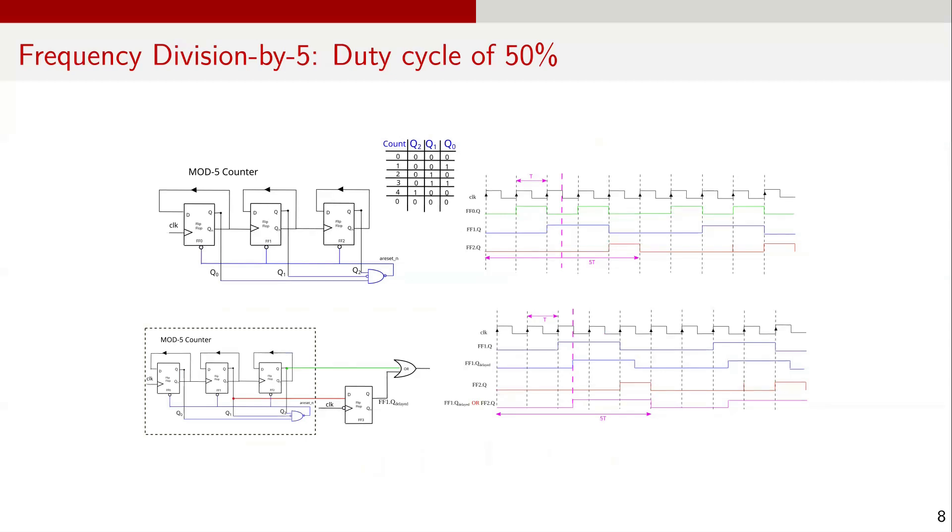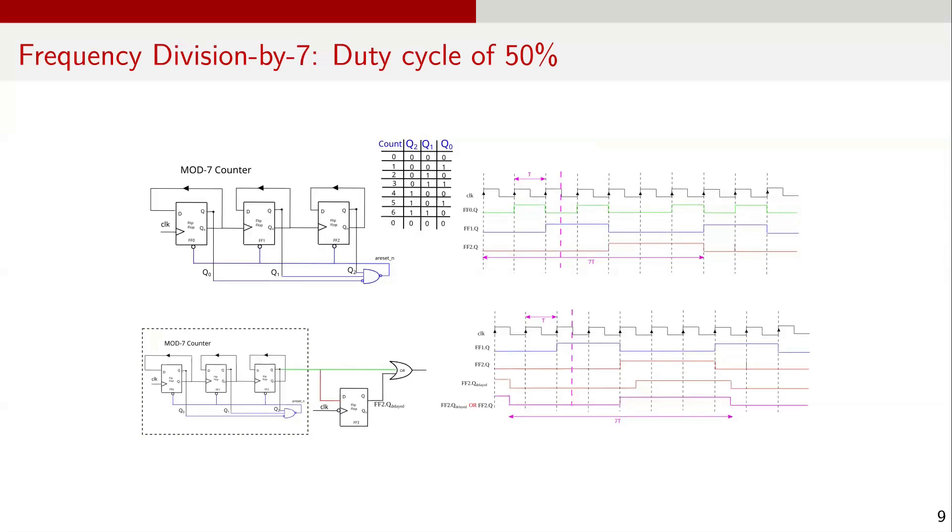So far, we discussed 1 over 3 and 1 over 5 frequency divider circuits. Pause this video now and try to reason out a 1 by 7 divider on your own. You will very likely figure it out. If you want to confirm your reasoning, here is a divide by 7 circuit that produces a 50% duty cycle output.